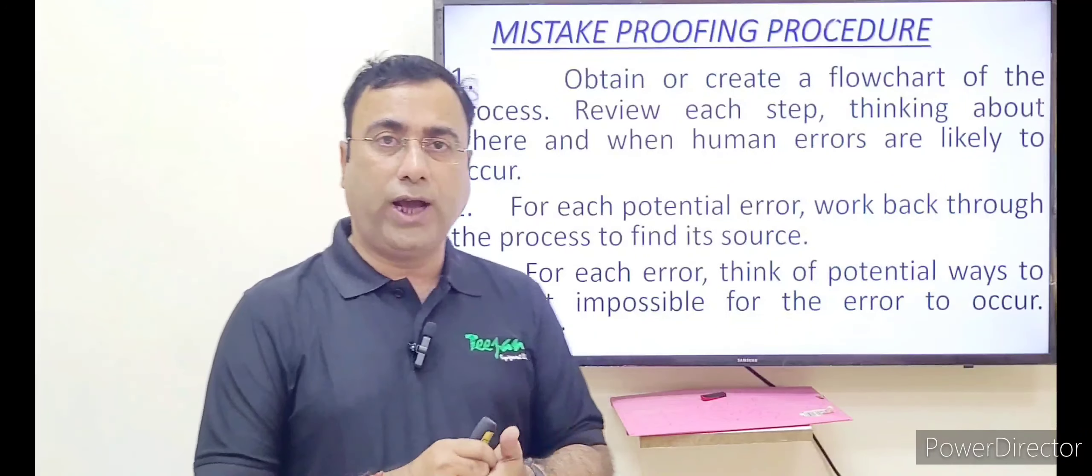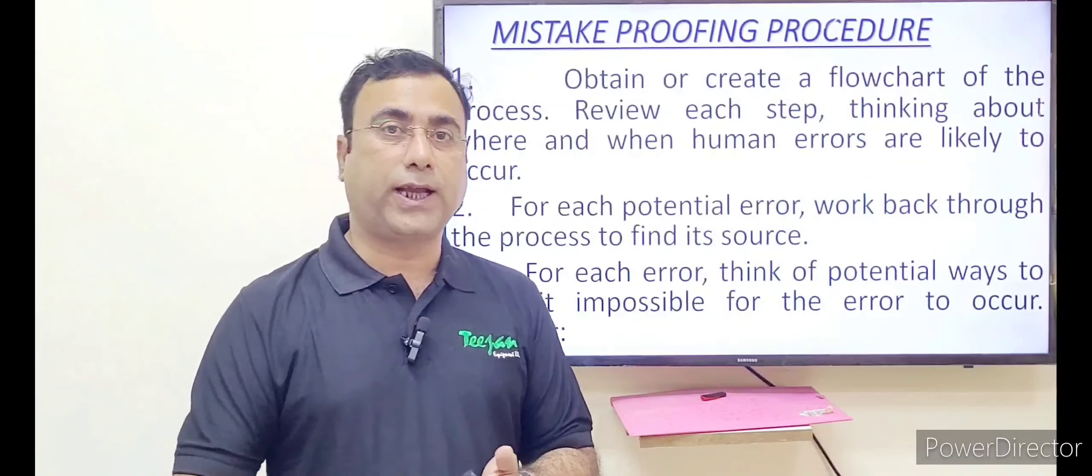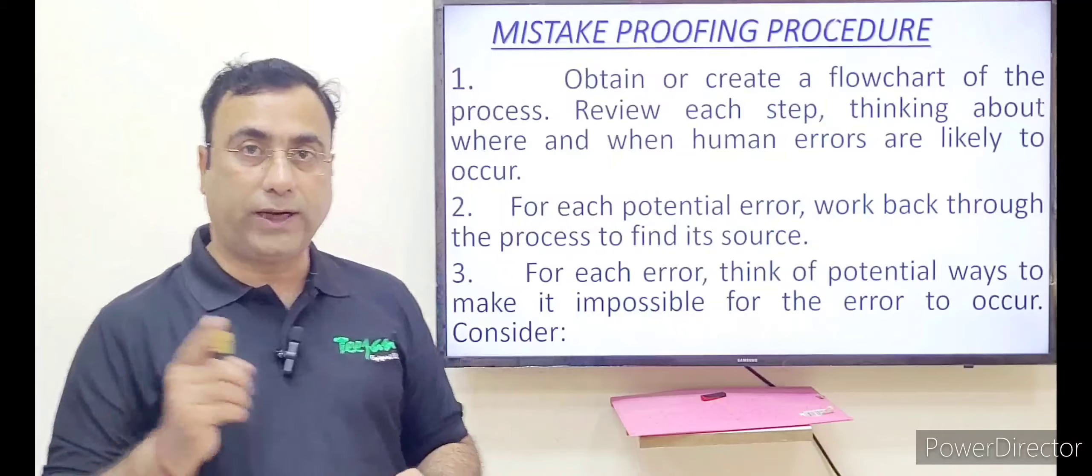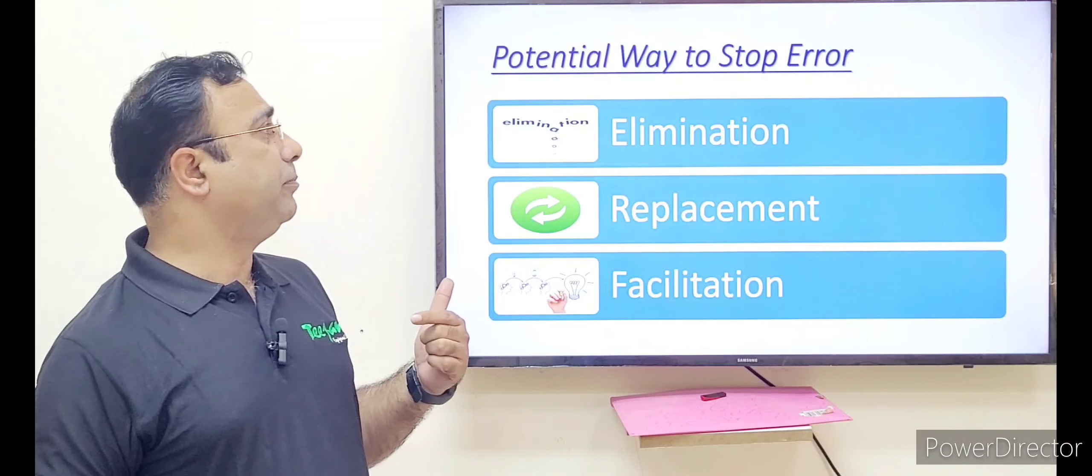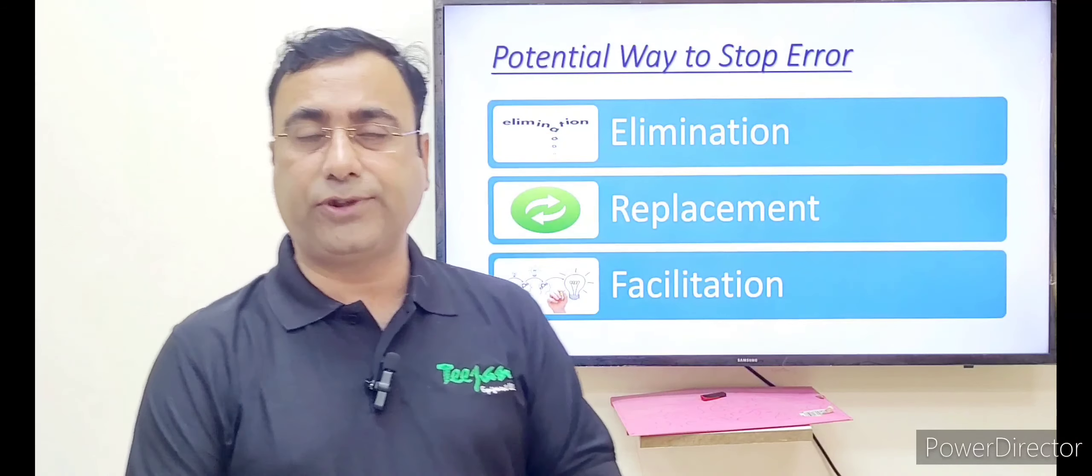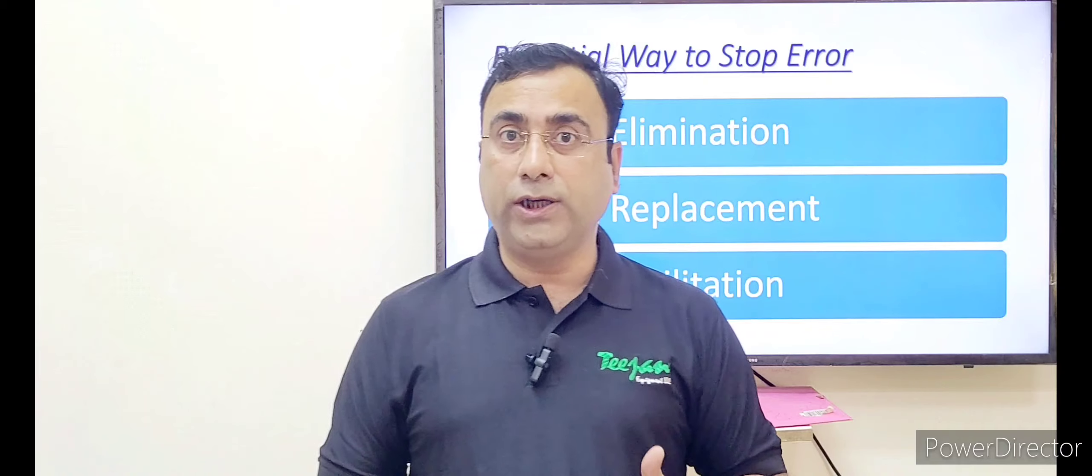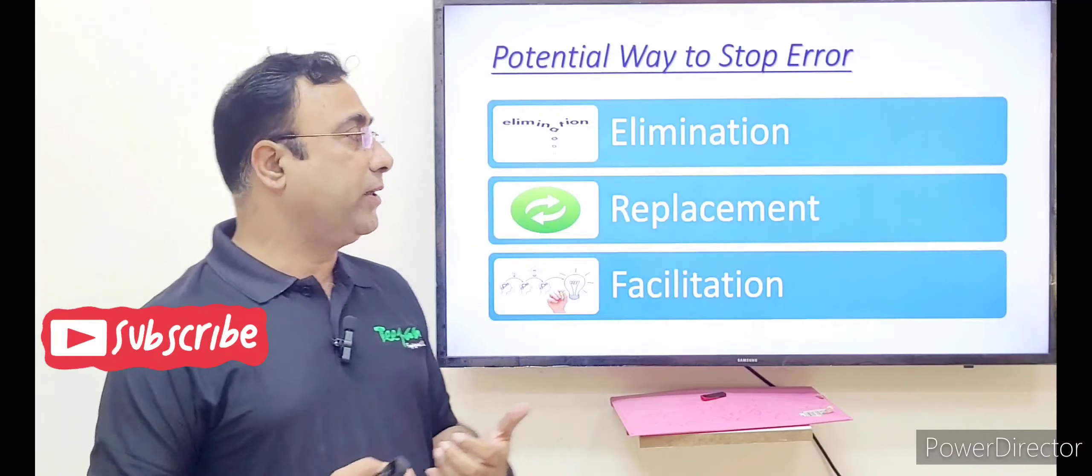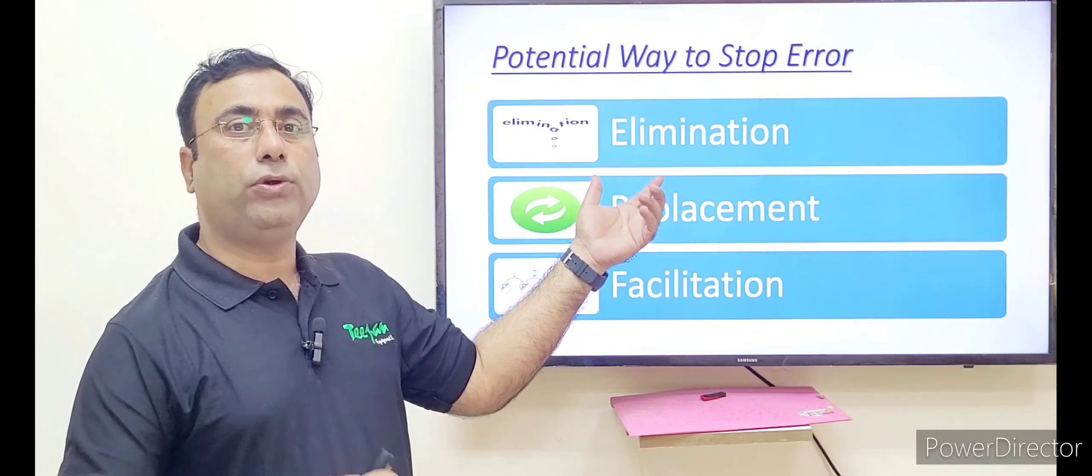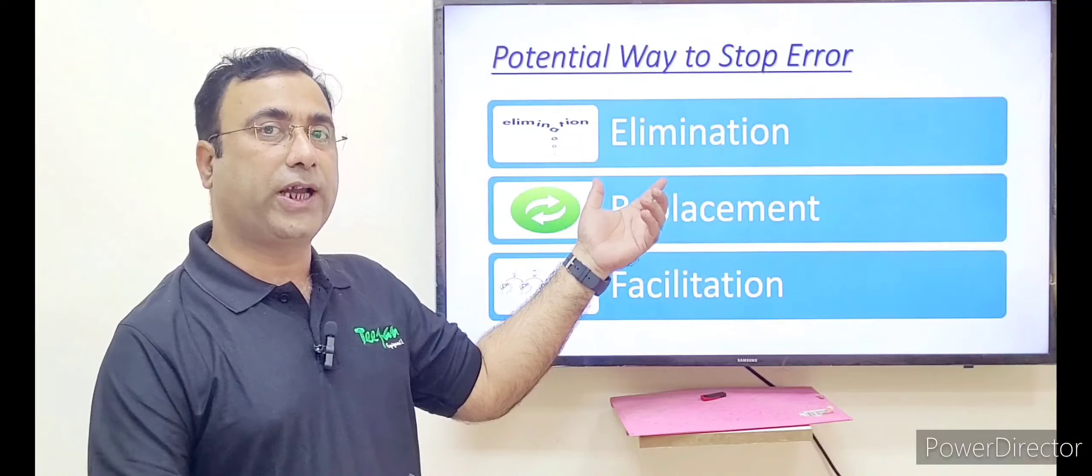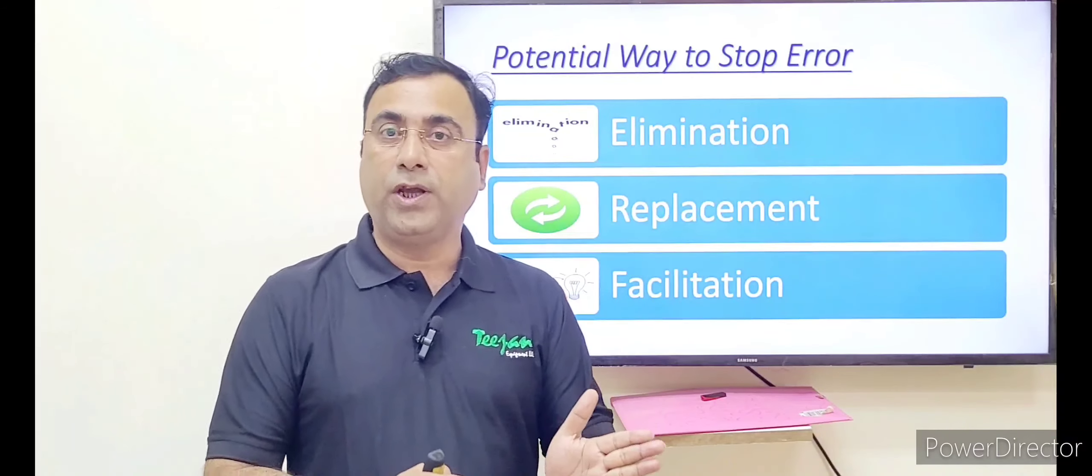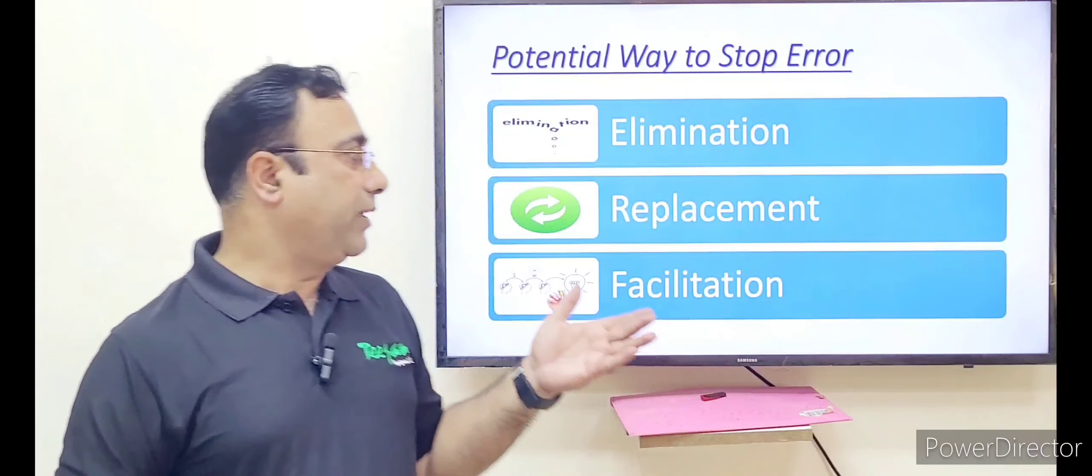In the flow chart, when you have identified or marked that human error can take place, what you can do to eliminate this? There are potential ways to make it impossible for the error to occur or to minimize the impact. There are three potential ways to remove this. The first one is elimination. Either you remove that step where you have identified that human can do the mistakes. Then there is replacement. If you can't remove that, then you can replace with any similar system which has lower impact.